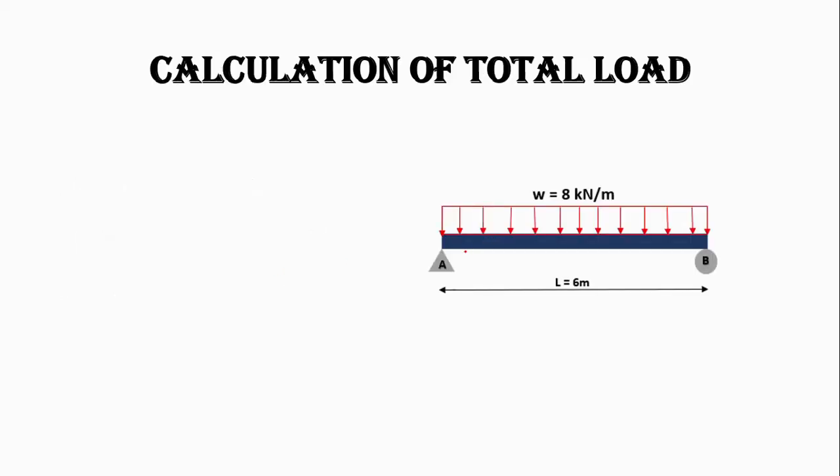Here you can see we have a beam AB with uniformly distributed load in the form of a rectangular shape.